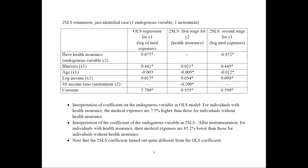For instrumental variables with two-stage least squares, the first stage regresses the endogenous variable — whether or not they have health insurance — on the exogenous variables and the instrument, then gets the predicted values. In the second stage, those predicted values replace the raw endogenous variable. Notice what happened to the coefficient: it changed in sign and is now significant. After instrumentation, for individuals with health insurance, their medical expenses would be 85.2% lower than those without health insurance — quite a different result, and a good justification for using instrumental variables instead of OLS.